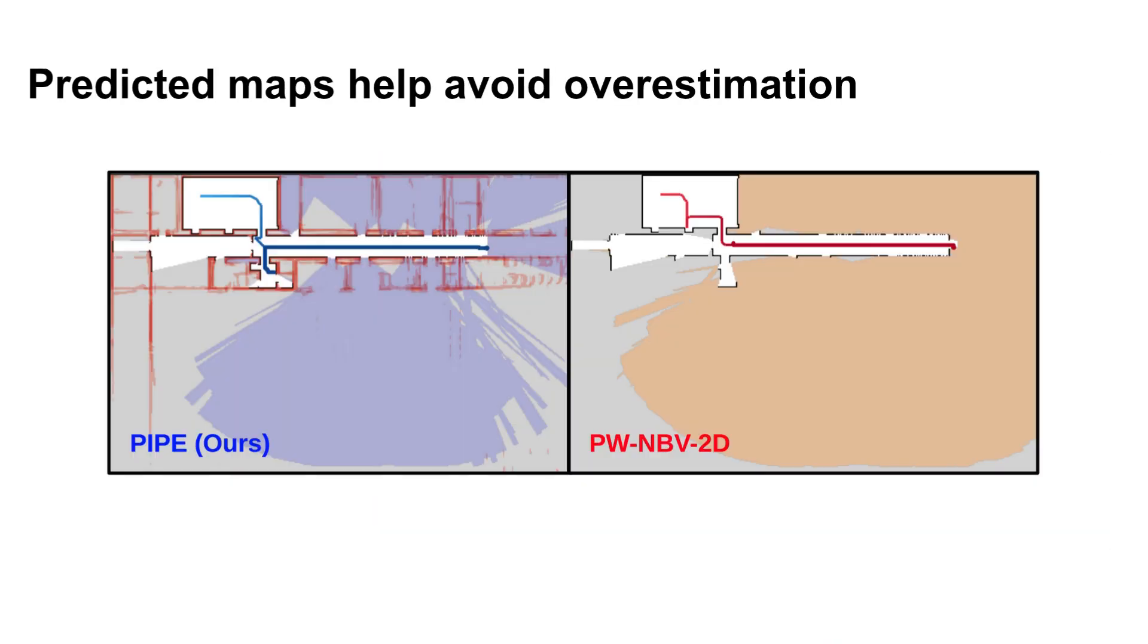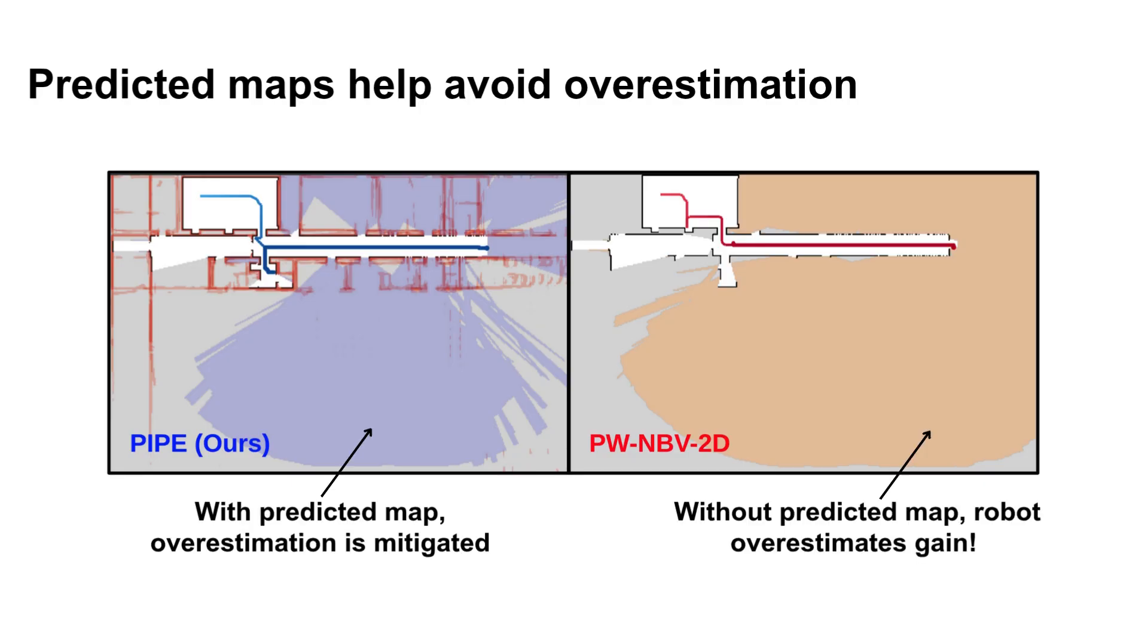We also use map predictions to avoid overestimation of cumulative sensor coverage. Without predicted map, the robot might overestimate the amount of expected information gain, but with a plausible predicted map, this problem is mitigated.